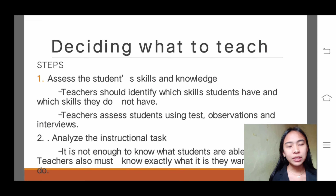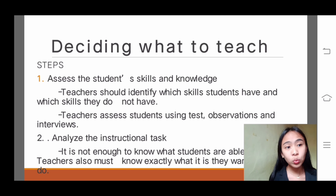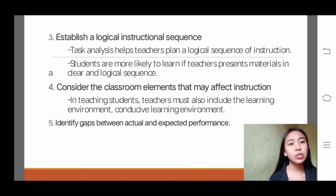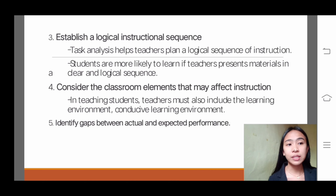Number two: analyze the instructional materials. Part of deciding what to teach is to analyze the instructional tasks, because it is not enough to know what students are able to do — teachers must also know exactly what they want students to do. Number three: establish a logical instructional sequence. Task analysis helps teachers plan a logical sequence of instruction, because students are more likely to learn if teachers present materials in a clear and logical sequence, and teachers must understand that acquisition of new skills depends on learning lower-level skills.